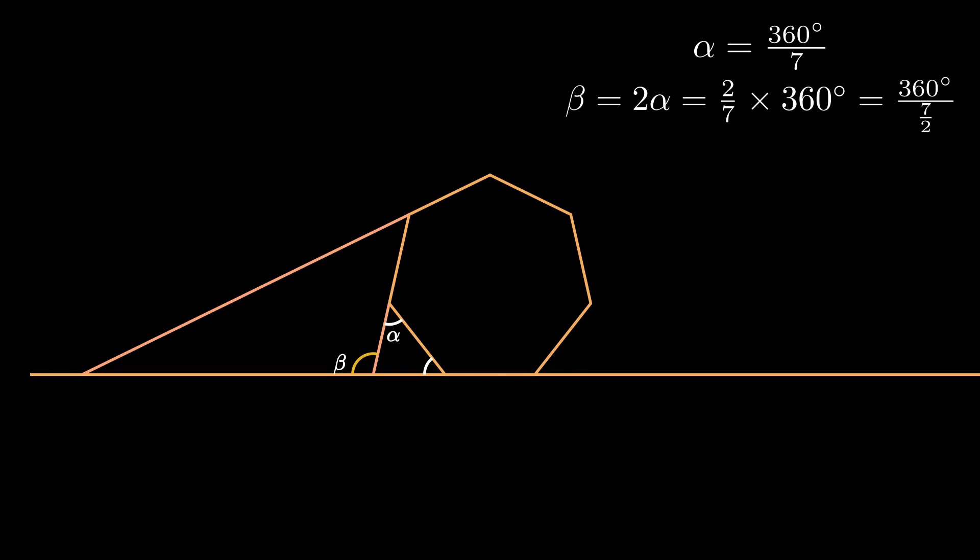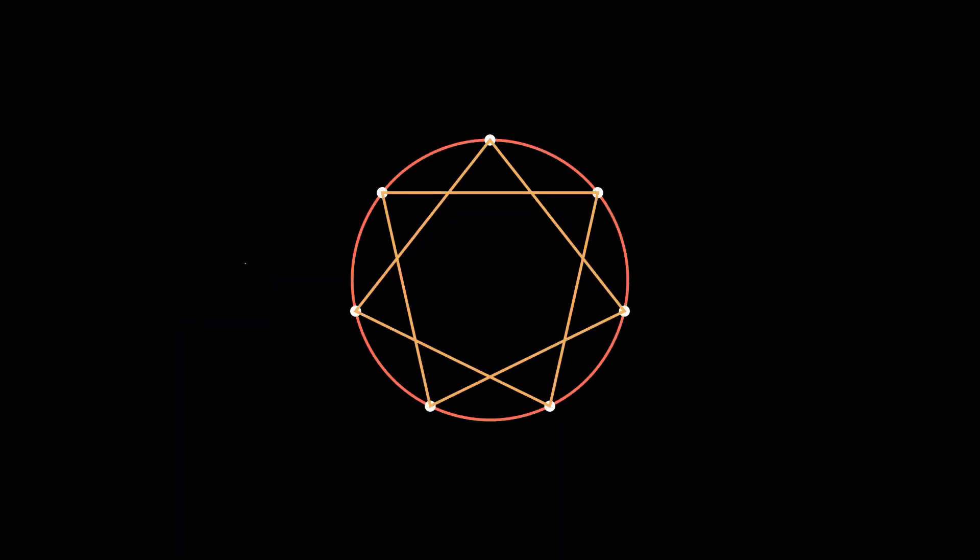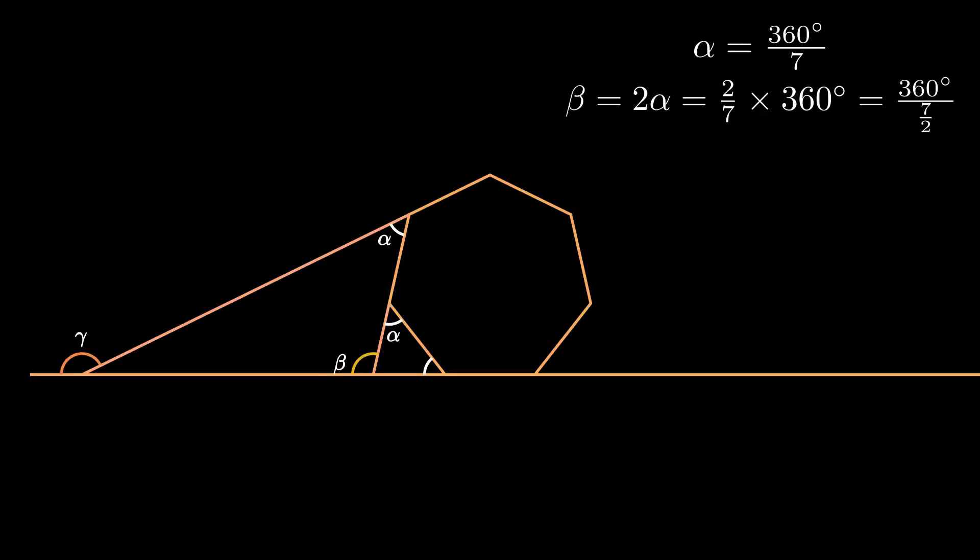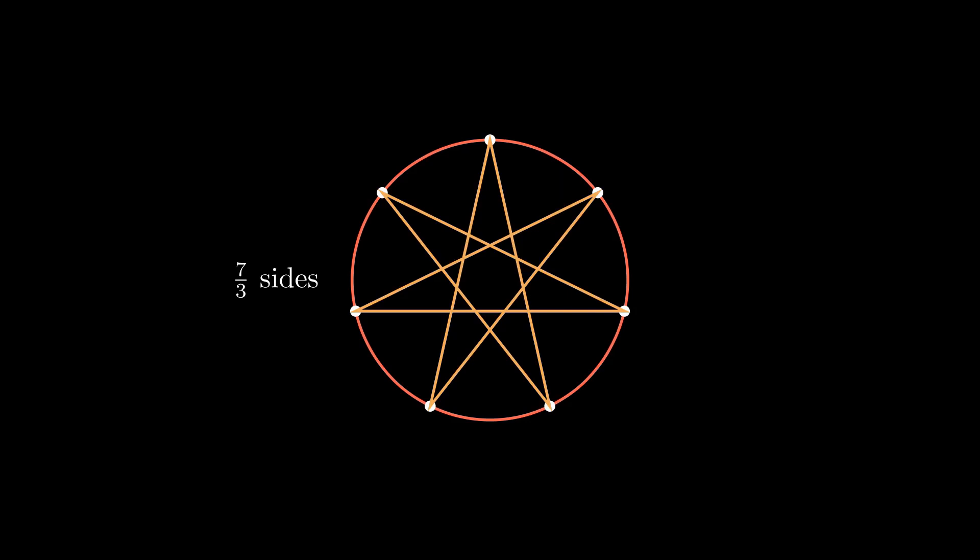But doesn't an exterior angle of 360 degrees by 7 halves mean n-sided? Hence, our first star has 7 by 2 sides. And similarly, gamma, the exterior angle of the second star, equals 360 degrees by 7 thirds, therefore our second star has 7 by 3 sides.